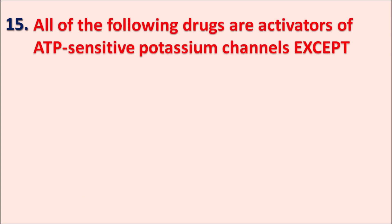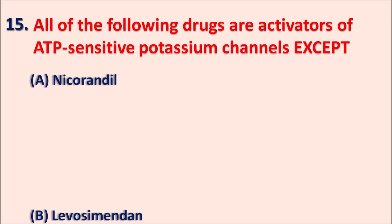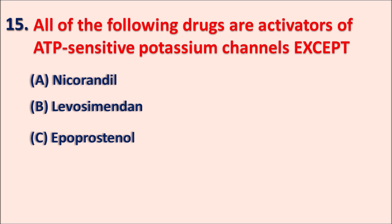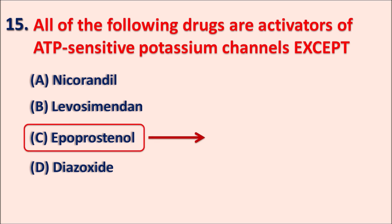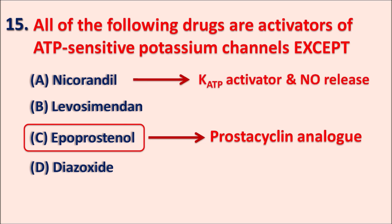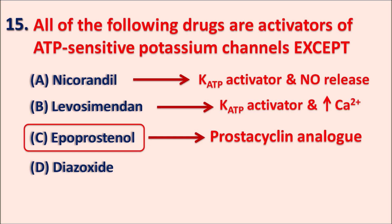Question fifteen: All of the following drugs are activators of the ATP-sensitive potassium channels except: A: nicorandil, B: levosimendan, C: epoprostenol, D: diazoxide. The right answer is epoprostenol. Epoprostenol is a prostaglandin analog, specifically a prostaglandin E2 analog also known as prostacyclin, which produces vasodilatation by release of nitric oxide. Nicorandil is a potassium channel activator that also releases nitric oxide. Levosimendan activates ATP-sensitive potassium channels and also increases calcium binding with troponin, increasing force of contraction. Diazoxide is a vasodilator which activates ATP-sensitive potassium channels.